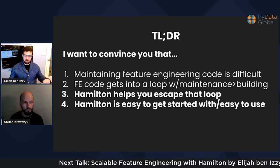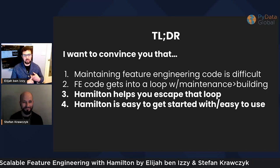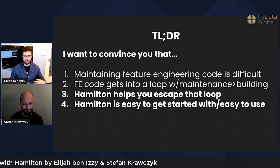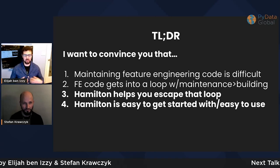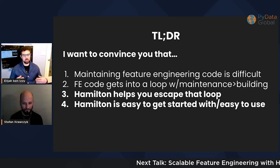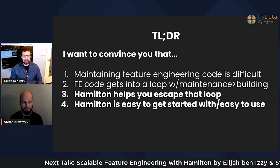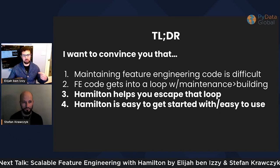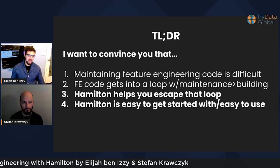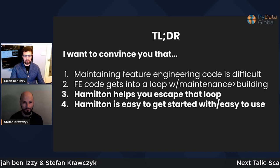Take-homes, in case you fall asleep for the rest of this. First, I want to convince you that feature engineering code is difficult — maintaining it, handling it over time, scaling it, that's all just a complex thing. Feature engineering code is difficult to maintain, and you can get into a loop where the maintenance work is actually harder than the building of it, so that building new features becomes difficult. Hamilton was built to help you escape that loop, and it's easy to get started with and easy to use.